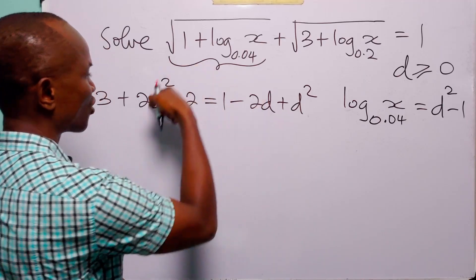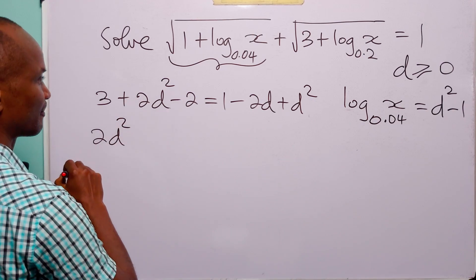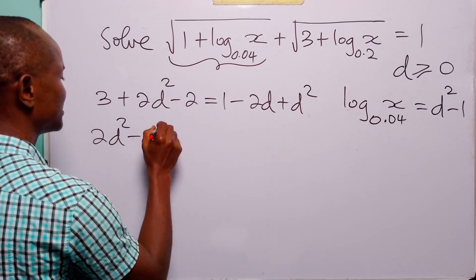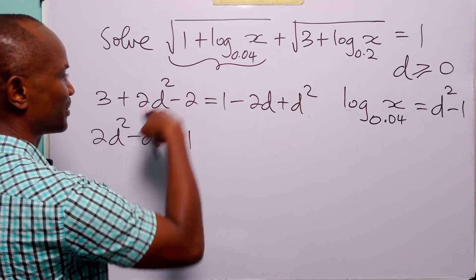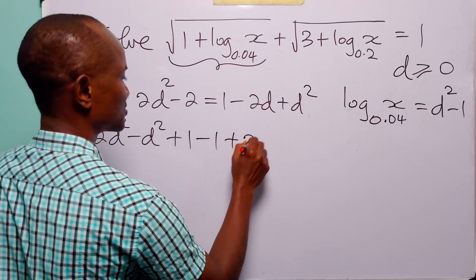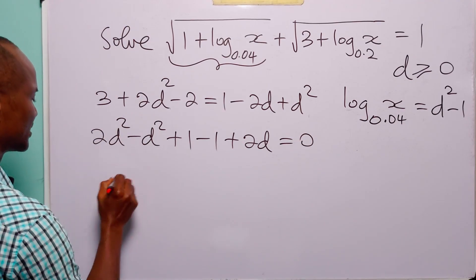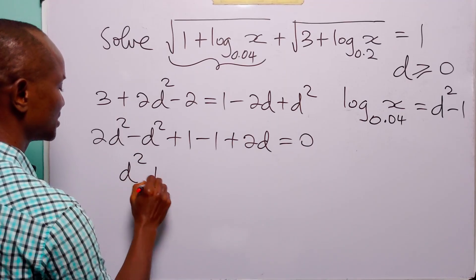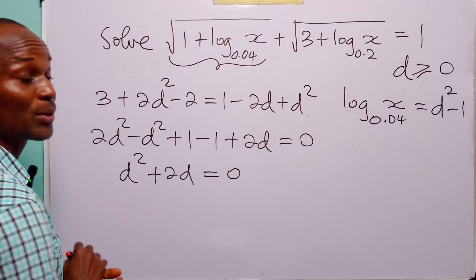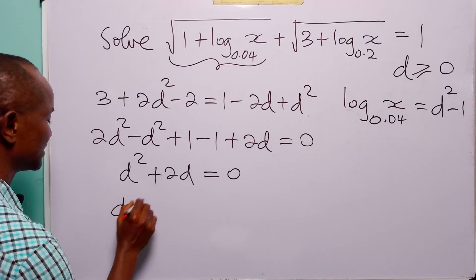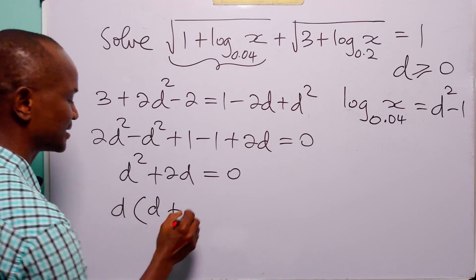Bringing all terms to the left-hand side: 2d squared minus d squared gives d squared; 3 minus 2 minus 1 gives 0; and plus 2d. So the equation becomes d squared plus 2d equals 0.